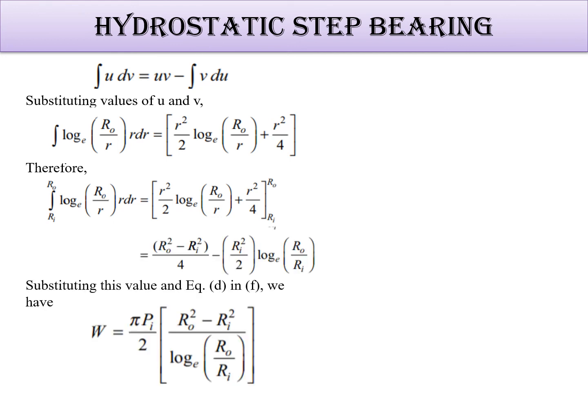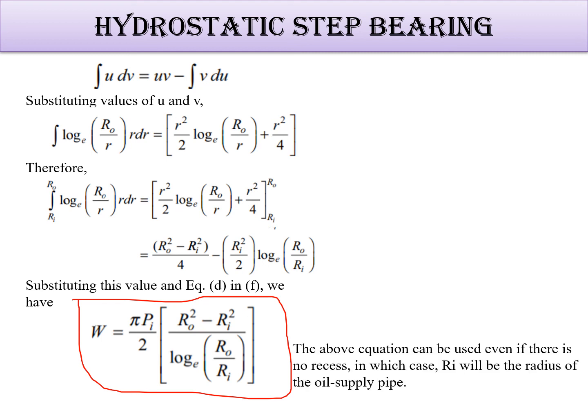And by solving, you will get the final equation, which is in this way: W is equal to πPi by 2 times (Ro² minus Ri²) divided by log to the base e Ro by Ri. This is how you are going to find out the thrust load. This is the equation.